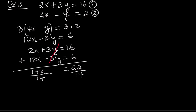Divide both sides by 14: x equals 22 over 14. Simplify the fraction by dividing the top and bottom by 2: x equals 11 over 7.